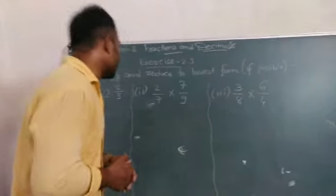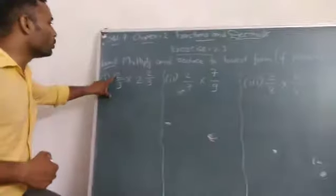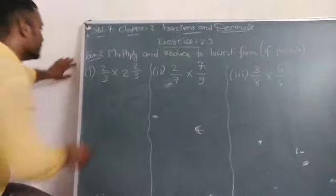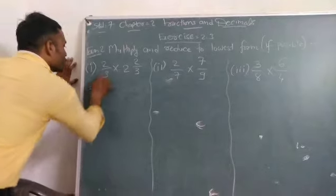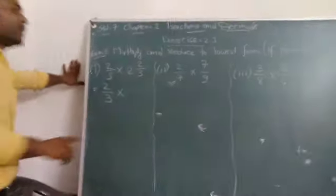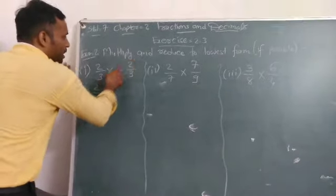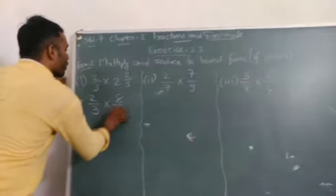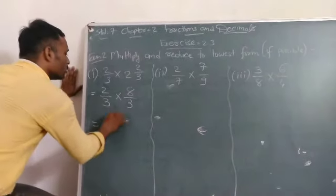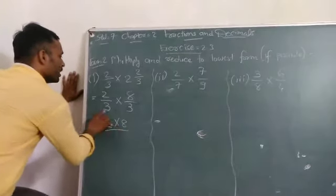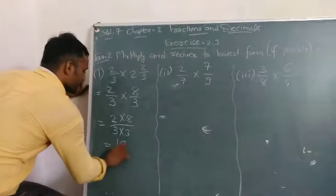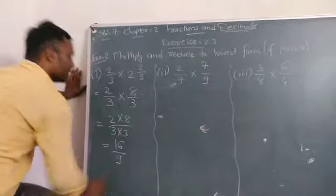Now see here, example No. 1 is 2 upon 3 multiply by 2 integer 2 by 3. Again, is equal to 2 upon 3 as it is, multiply by - now convert it - 2 times 3 is 6 plus 2 is 8 upon 3. Now, numerator multiply to numerator, denominator multiply to denominator. 2 times 8 is 16. 3 times 3 is 9.